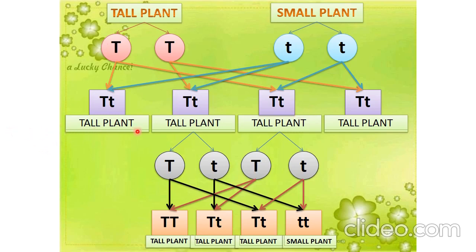This is the F1 generation which is being expressed as tall plants. Now when these tall plants of F1 generation were hybridized again, when the traits are separated—Tt and Tt—when they combine, keep one fixed and combine with the remaining three. So we get TT, Tt, Tt, and tt.